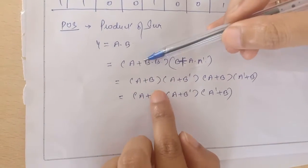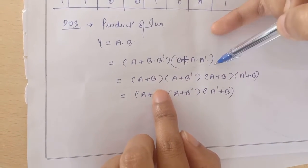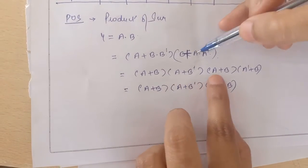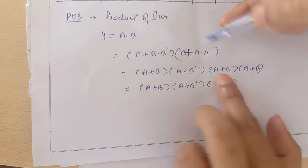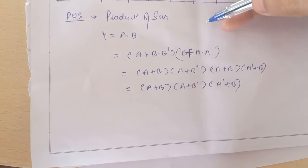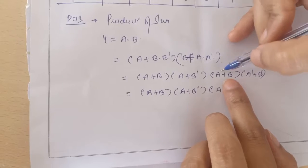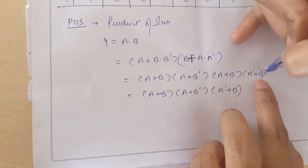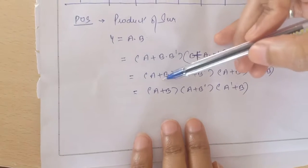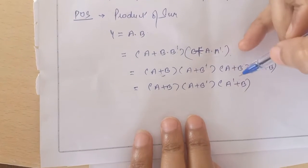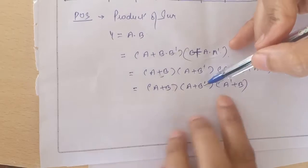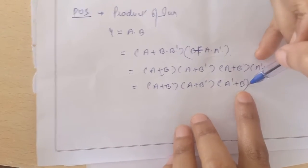Expanding by distributive property gives: A plus B, A plus B-bar, B plus A, and A-bar plus B. You can write A plus B or B plus A — both notations are the same. So the final POS expression is: (A+B)(A+B-bar)(A-bar+B).